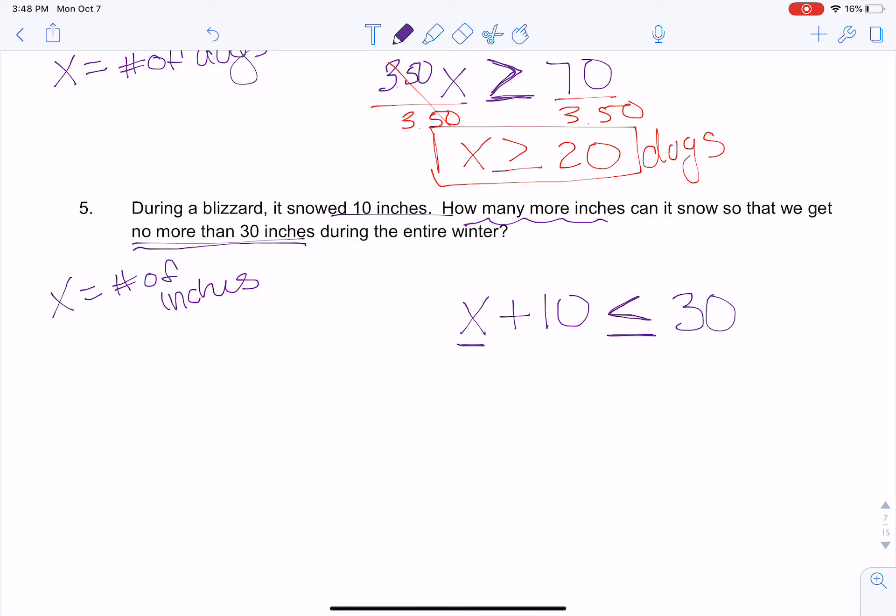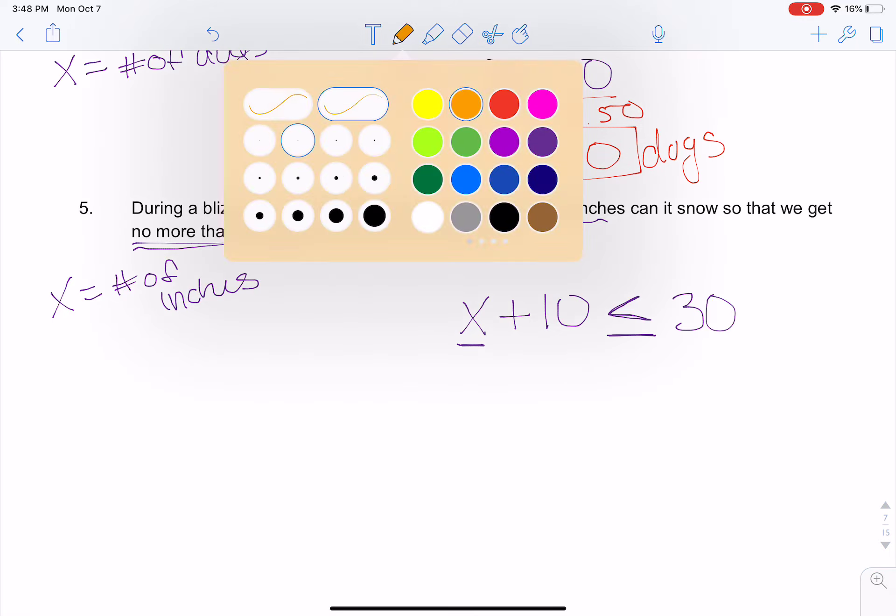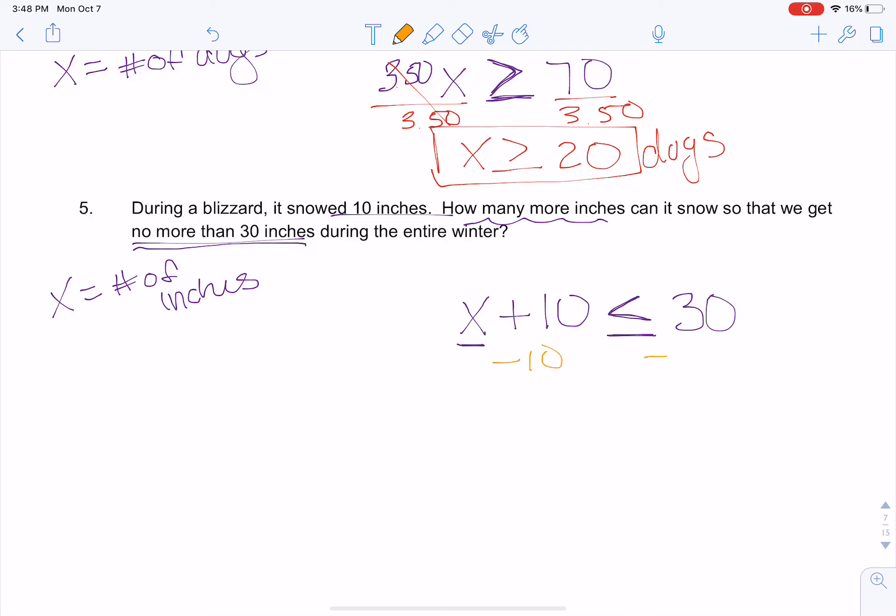So if I want to figure out how many more inches it can snow, I'm going to do the opposite operation. I'm going to subtract 10 on both sides, so it can snow no more than 20 inches. Okay, there we go. If you have any questions, let us know. Go ahead and start your practice.